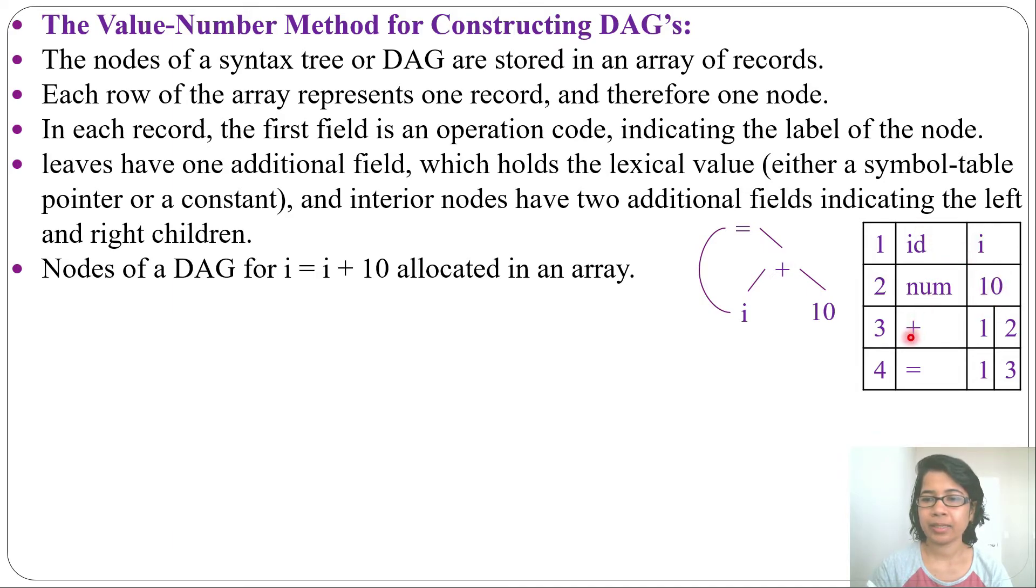Next plus, plus is an interior node, it has two children, one is i, another is 10. So plus has two additional fields, one for i. Rather than writing id or i, we are using this one. So left child is 1 and right child is 2. So this 1, 2, 3, 4, these are the value numbers.